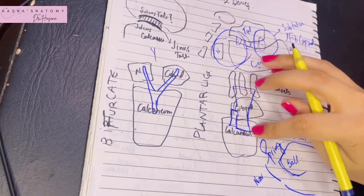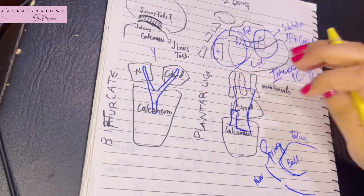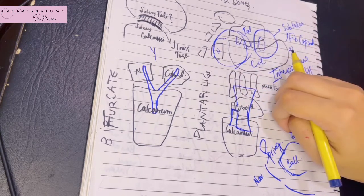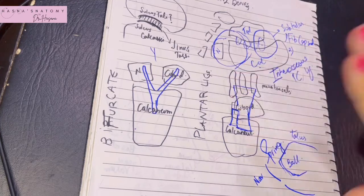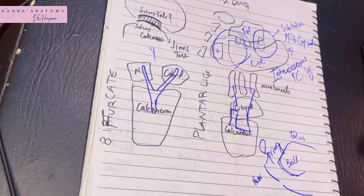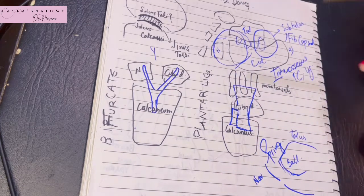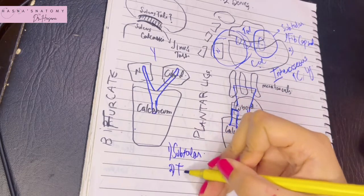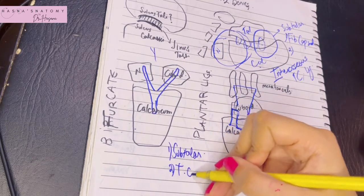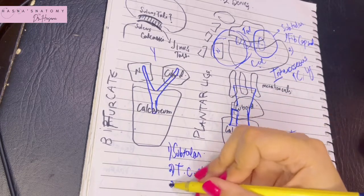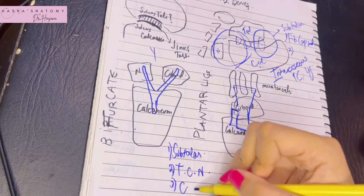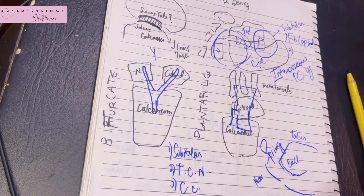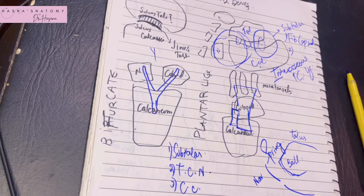The two plantar ligaments are very important — the most important structures in maintaining the arch of the foot. So those were the main intertarsal joints: the subtalar joint, the talo-calcaneo-navicular joint, and the calcaneo-cuboid joint. There are other joints also between the tarsal bones, but these were the most important.